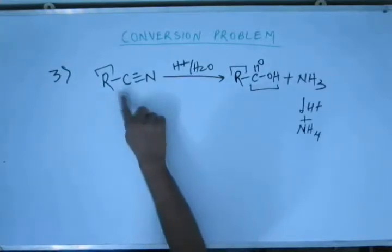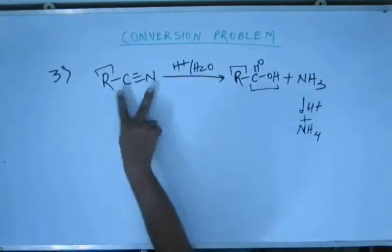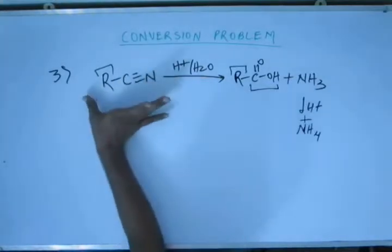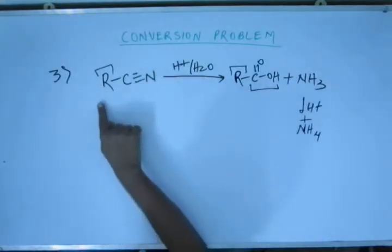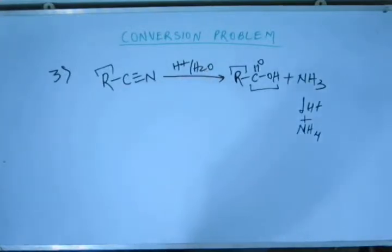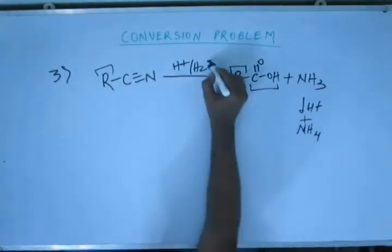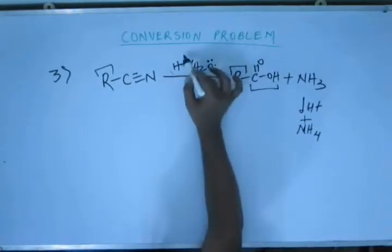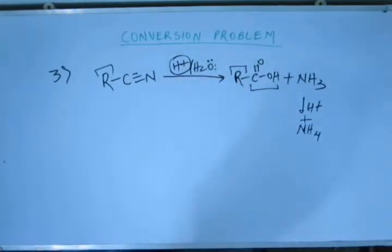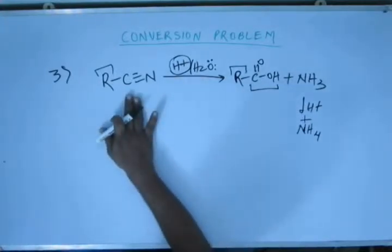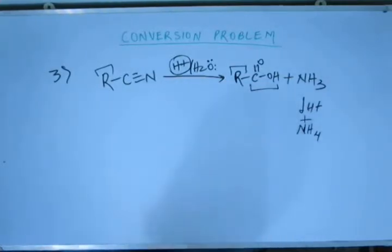The cyanide is decently stable — C triple bond N, with very high bond strength. The R part is inert and will not initiate the reaction. Water is thermodynamically stable; it's a very stable solvent and as such will not initiate the reaction because the substrate is electron-rich — you have pi bonds — and water is also electron-rich due to lone pairs on oxygen. The electron-deficient species is H+. H+ is going to initiate the reaction and will come to our substrate asking for electrons.